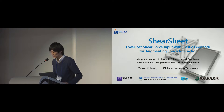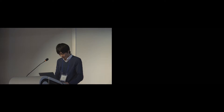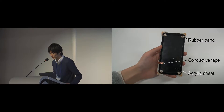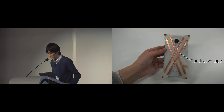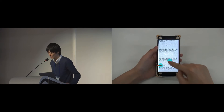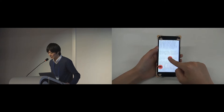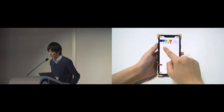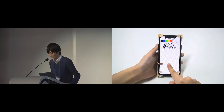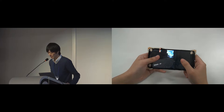Let me introduce a quick summary of this work. We propose a simple interface called Shear Seat, which introduces a rubber-mounted transparent seat with conductive material attached on a touch panel. This interface distinguishes between normal touch and tangential force input, depending on whether the seat moves or not, without requiring any external sensors or power. We explore a wide range of interaction techniques using this interface.